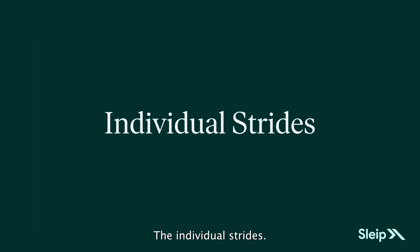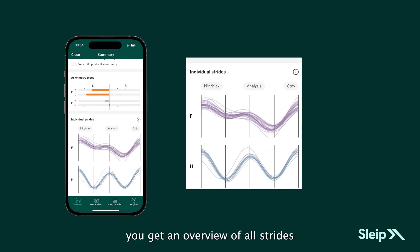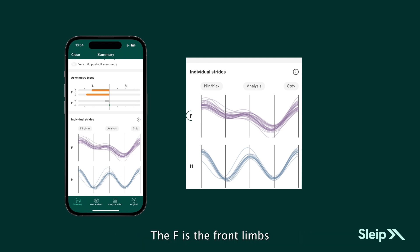In the Individual Strides section, you get an overview of all strides included in your analysis. It illustrates the general tendency but also gives you details on the stride-to-stride variation. F refers to the front limbs and H refers to the hind limbs.